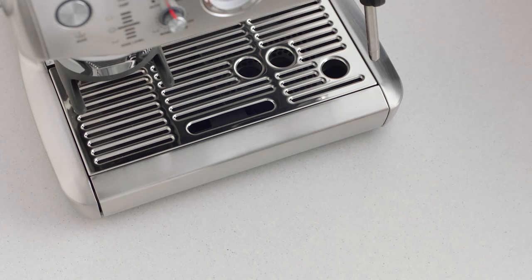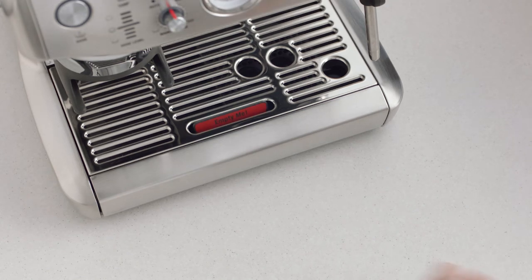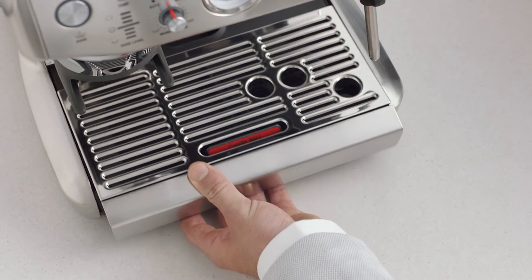The drip tray should be removed, emptied, and cleaned periodically with warm water, particularly when the Empty Me indicator shows.